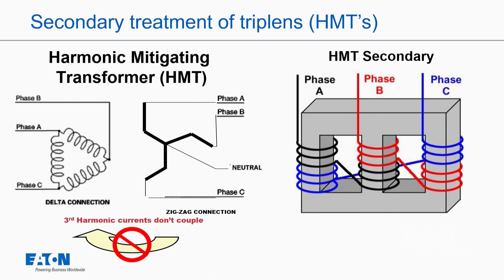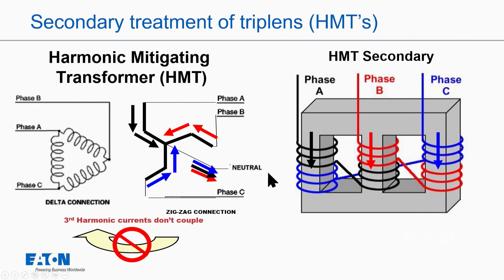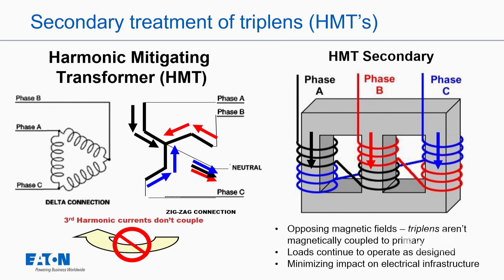This is very important: the fifth, seventh, and all the negative and positive sequence harmonics will go right through the transformer. Now let's look at a harmonic mitigating, or delta-zigzag, transformer. The third harmonics don't couple, and here's why. If we look at each leg of the core, we have current flowing on the first winding from phase A, and current flowing on the same leg from phase C. These arrows are opposite each other and cancel out on that leg. It circulates back to the load but doesn't get into the primary winding — the same on the middle leg and the third leg.